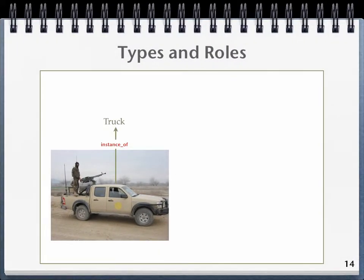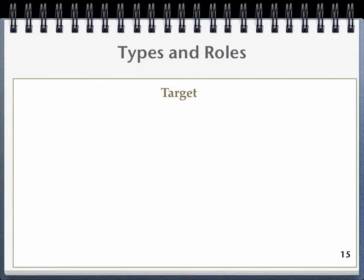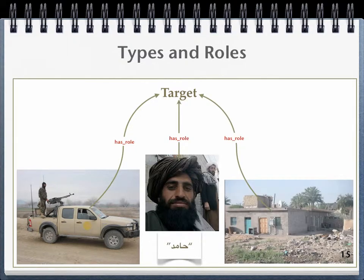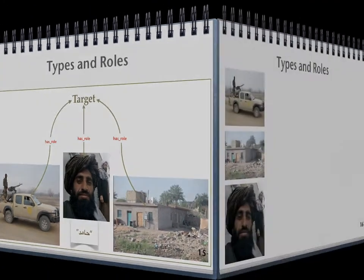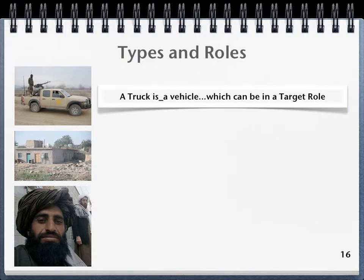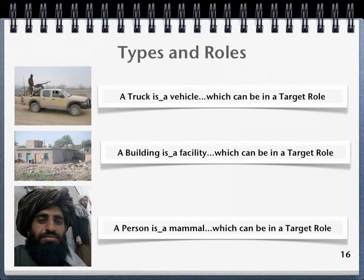And a truck is a type of motor vehicle which can be in various roles, such as a weapons platform, troop transporter, an IED transporter, and again, a target. This means that a truck, as well as a person and a building, can all be in a target role for some limited period of time. But note that saying that a person is a target, or a building is a target, or a truck is a target is not an accurate way of describing reality. What is accurate to say is that a truck is a vehicle which can be in a target role, or a building is a facility which can be in a target role, or a person is a mammal or an animal which can be in a target role.